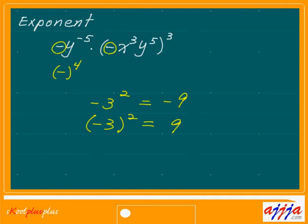The next one: y to the negative fifth power. Anytime you have a negative power, you can change it to positive by putting it over one — so it becomes 1 over y to the fifth power. Now x to the third power times third power: you just multiply, 3 times 3 is 9, so x to the ninth power. Then y to the fifth times third — total y to the 15th power.